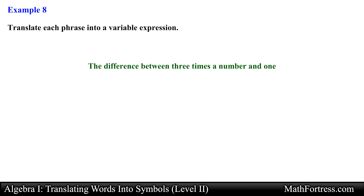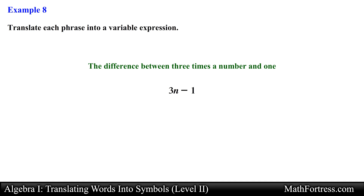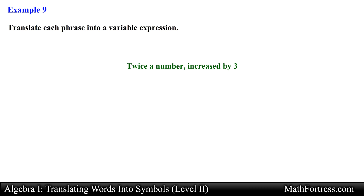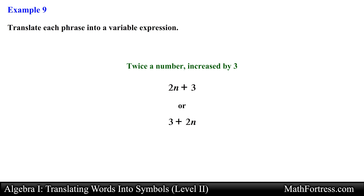The difference between 3 times a number and 1. Here we have a subtraction because of the keyword 'difference.' The two expressions being subtracted are 3n and 1, so the final answer is 3n minus 1. Let's try the following phrase: 'Twice a number increased by 3.' Here we have a sum because of the keyword 'increase,' so this phrase translates to 2n plus 3, or 3 plus 2n.